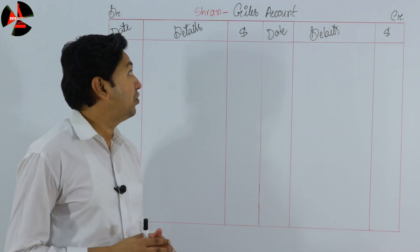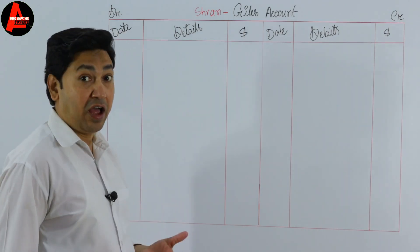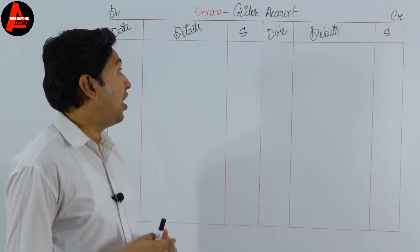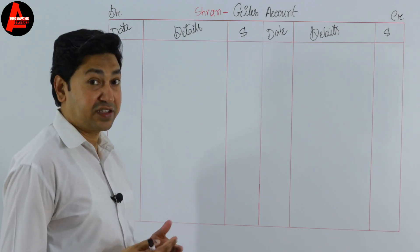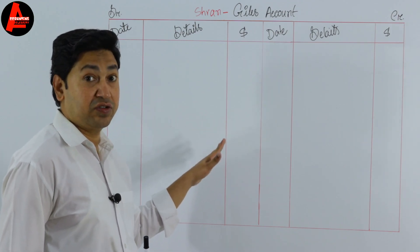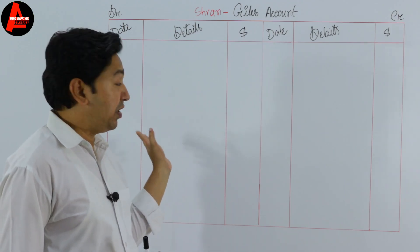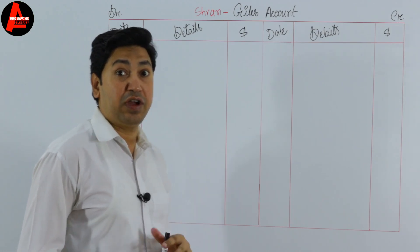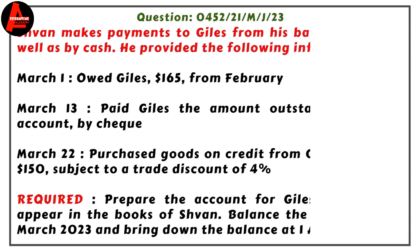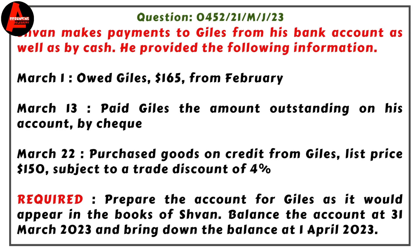Here I will show you, if you have a supply ledger after preparing the PD cash book, how to answer in the exam. We have one transaction related to the previous account PD cash. Before we start, we have a question: Shaman makes payments to a creditor from his bank account as well as by cash. He provided the following information.